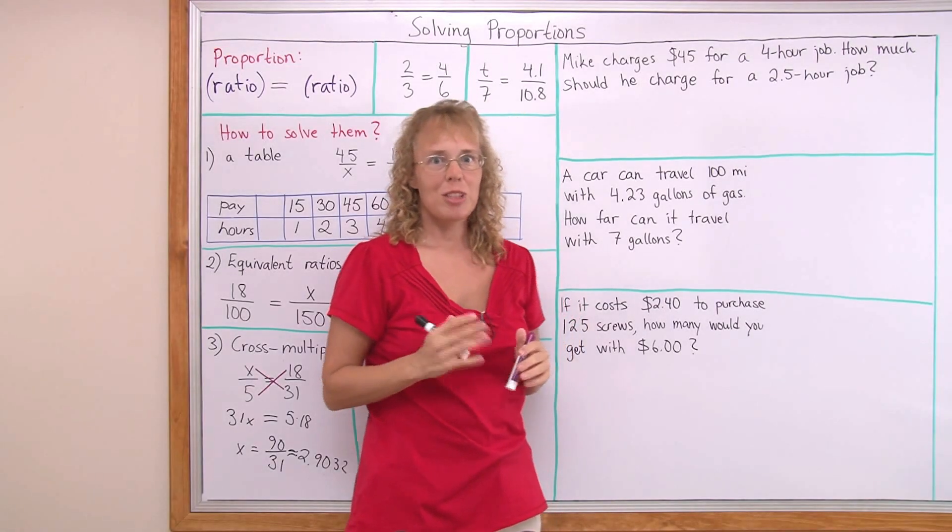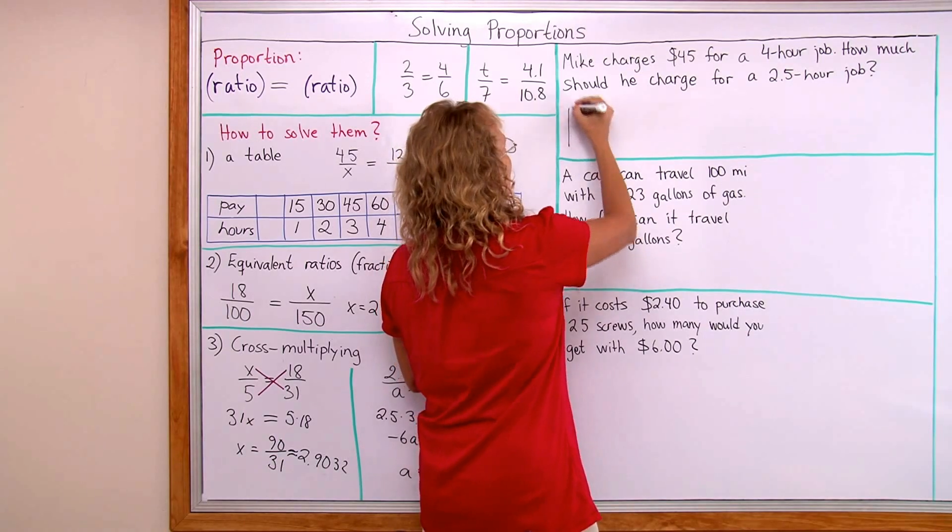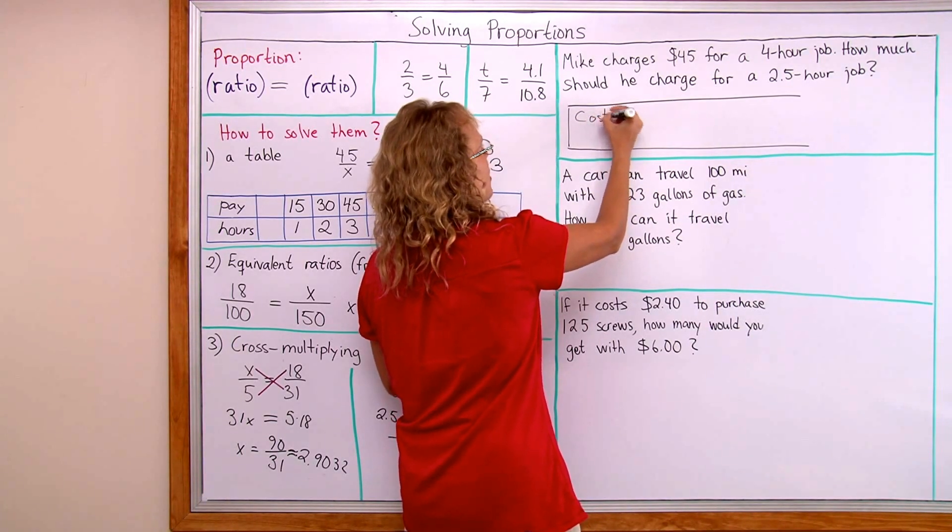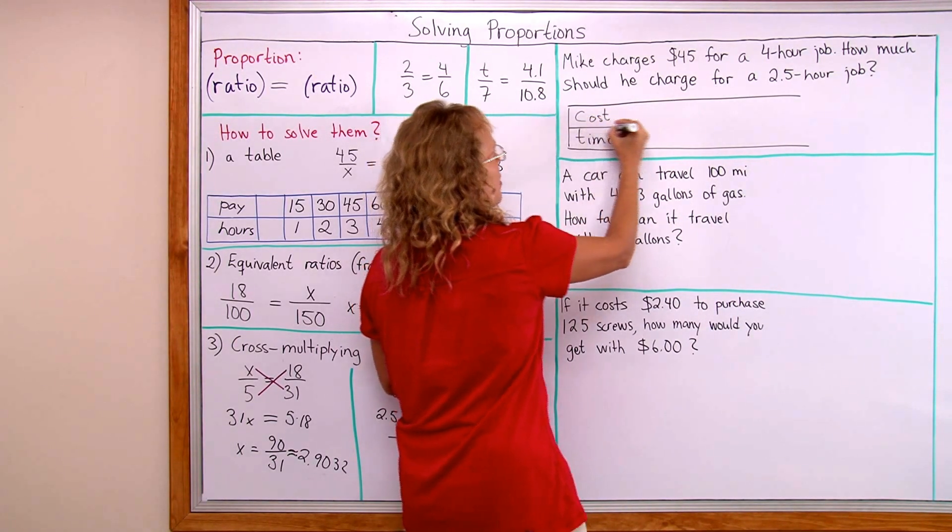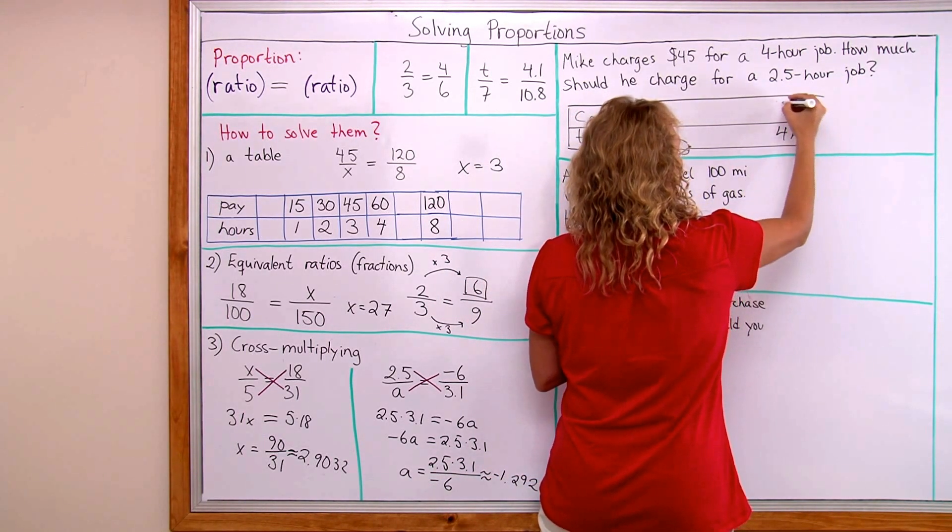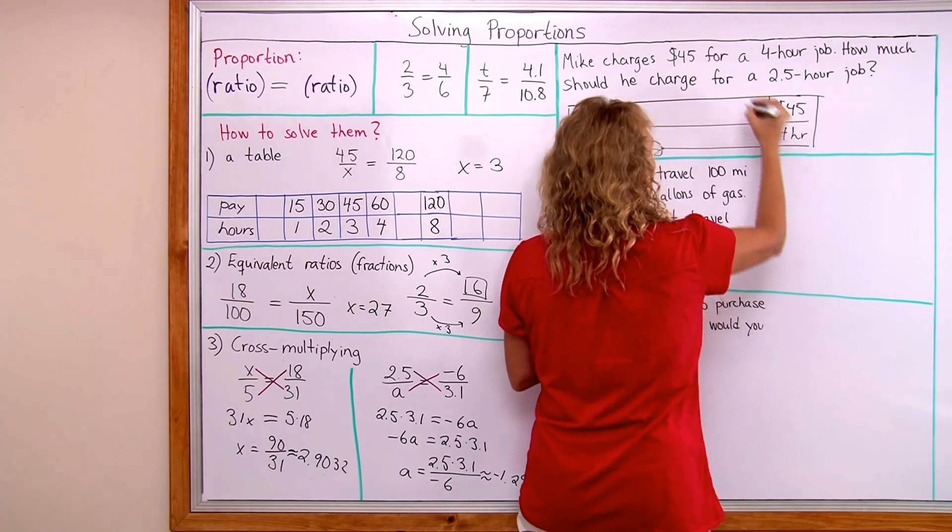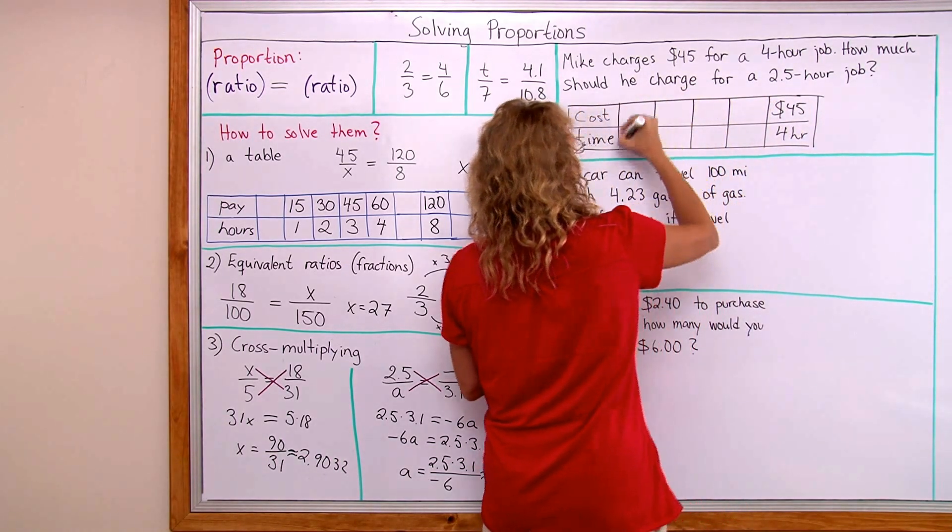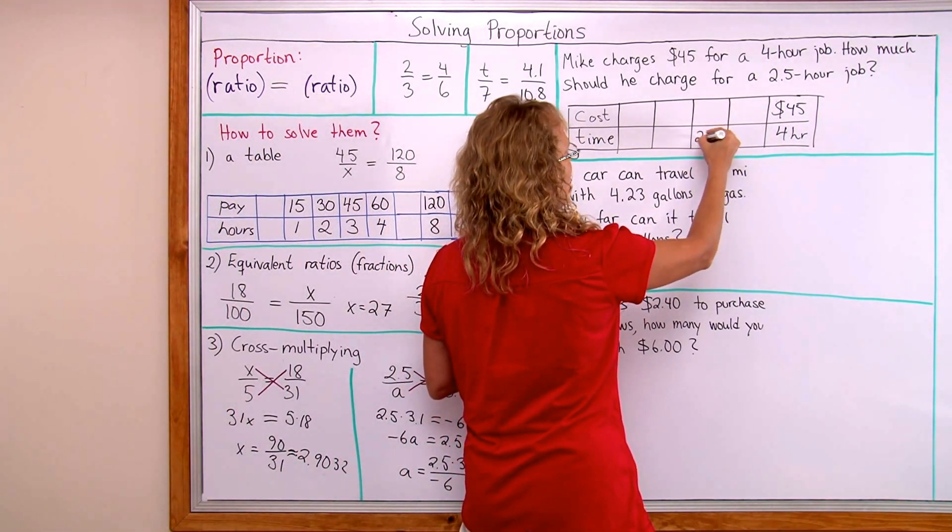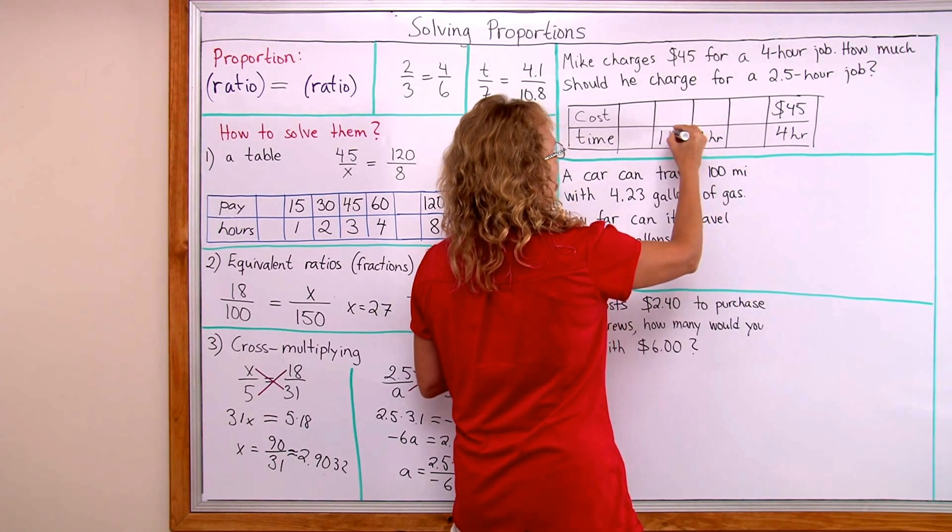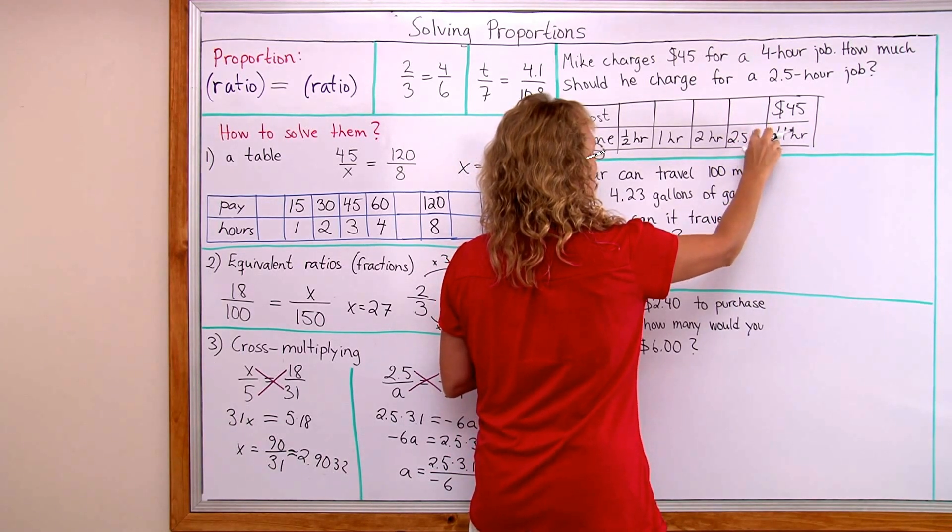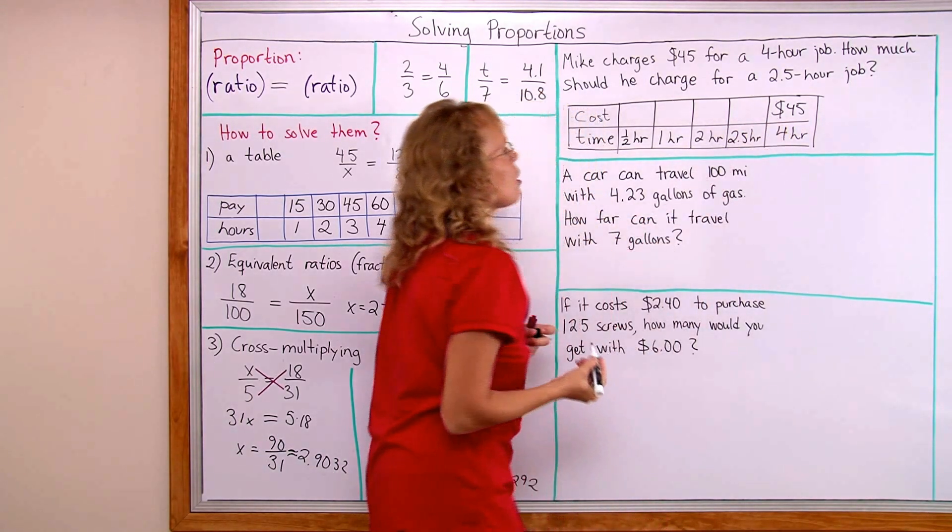I think I'm gonna solve this from using a table. Mike might wanna make a table for his customers anyway. Let's say here is the cost and here's the time in hours and here's here four hours and forty-five dollars. And now I can think about these different time periods. For example two hours. Let's put two hours here. One hour, half an hour and the two and a half hours that we need to know.